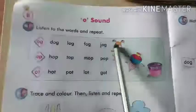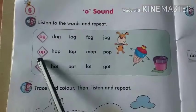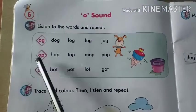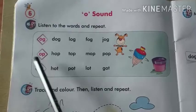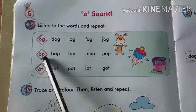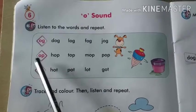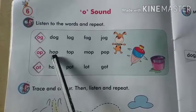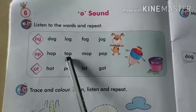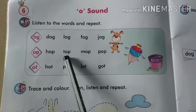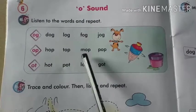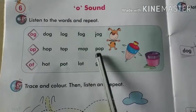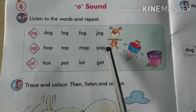So this is jogging. Now see it. O, P. O sounds O. P sounds P. O, P. H, O, P — Hop. T, O, P — Top. M, O, P — Mop. P, O, P — Pop.